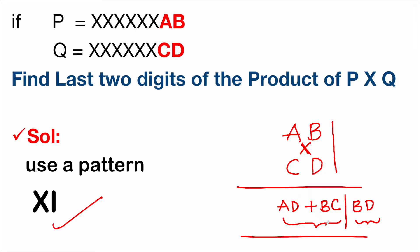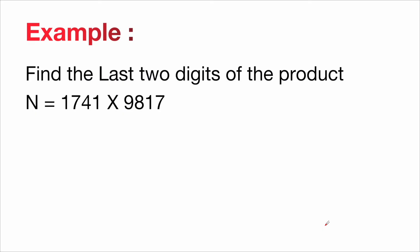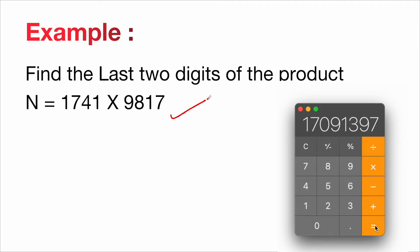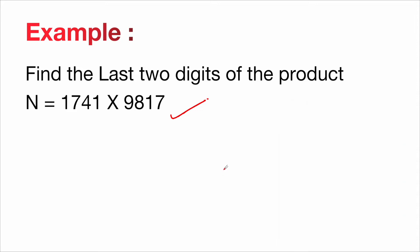Let's take one example to get clear clarity. Find the last two digits of the product 1741×9817. If you have a calculator, you can check: 1741×9817 gives 17,091,397. So the last two digits are 97. But calculators are not allowed in the exam, so we need another approach.